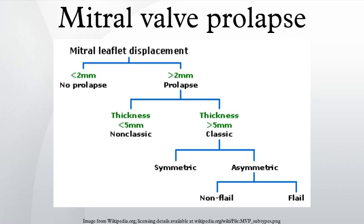Mitral valve prolapse syndrome: Historically, the term mitral valve prolapse syndrome has been applied to MVP associated with palpitations, atypical chest pain, dyspnea on exertion, low body mass index, and electrocardiogram abnormalities in the setting of anxiety, syncope, low blood pressure, and other signs suggestive of autonomic nervous system dysfunction. Occasionally, supraventricular arrhythmias observed in MVP are associated with increased parasympathetic tone.